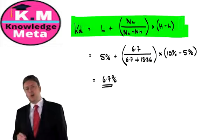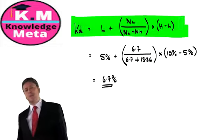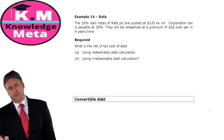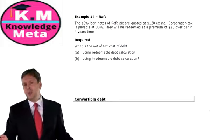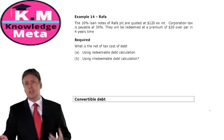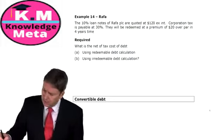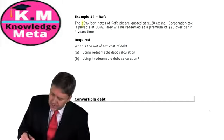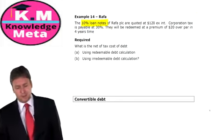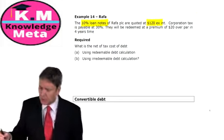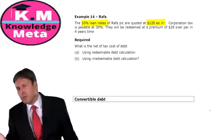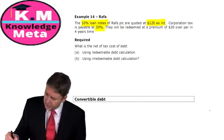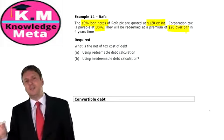Let's move on and see where this knowledge takes us, because we have to be ready for the peripheral variations. Here's a further example — Example 14, Rafa: 10% loan notes quoted at $120 ex-interest. That's the current market value. Corporation tax is 30%, and they will be redeemed at a premium of $20 over par in four years' time.